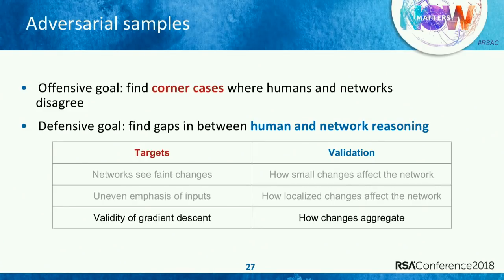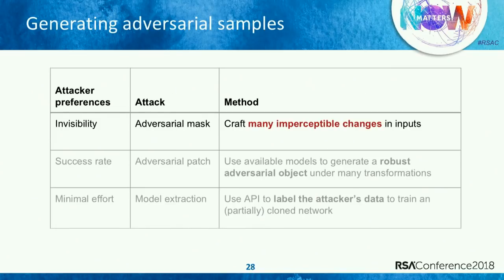Third observation: the way neural networks aggregate changes is very different from the way humans do. Making 100 small changes in sequence to an image could result in something that looks like either a single small change or a very large change to a neural network. Neural networks and humans disagree for a huge class of changes — this large class of disagreements manifests as flexibility for the attacker: the flexibility to tune between having an invisible attack or a very robust attack. These invisible attacks are called adversarial masks — you make many small changes to many parts of the input so humans won't recognize it, but a machine will.